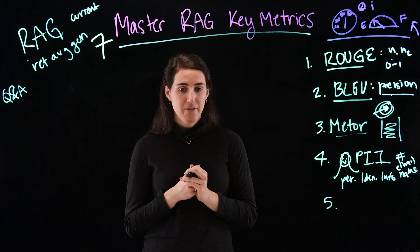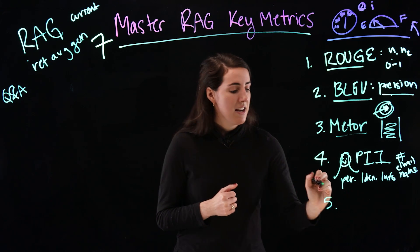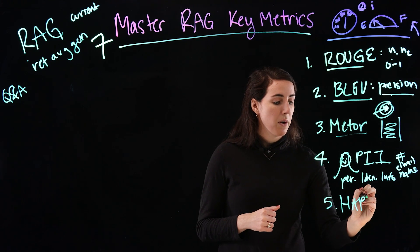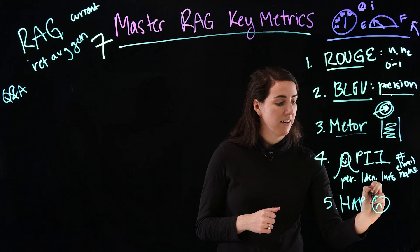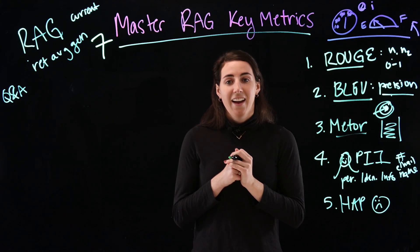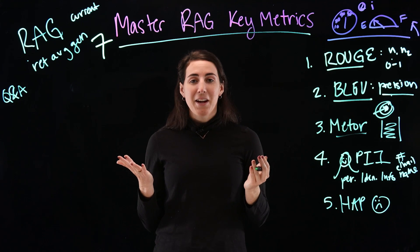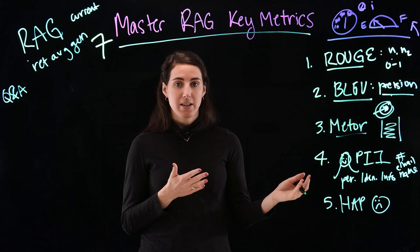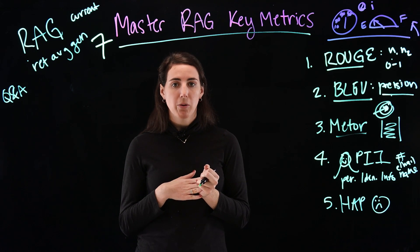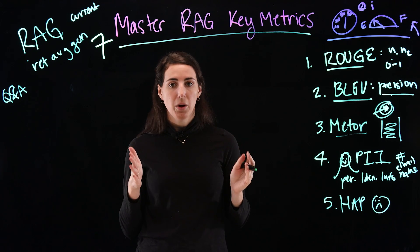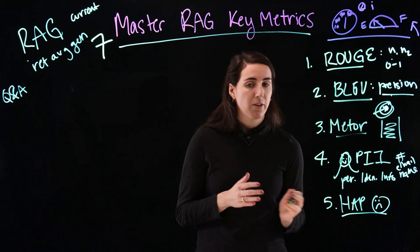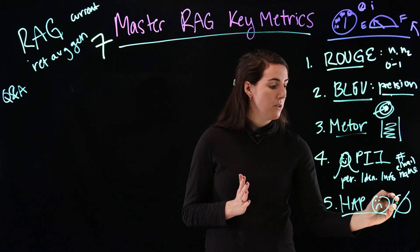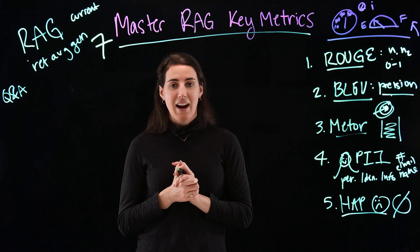We also have hate, abuse, and profanity, also known as our HAP score. It's not a good thing if the model is producing hateful, abusive, or profanity content. You'll want to monitor the model at all times to make sure this information is not appearing — we do not want this to happen.